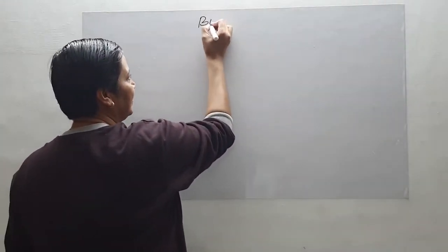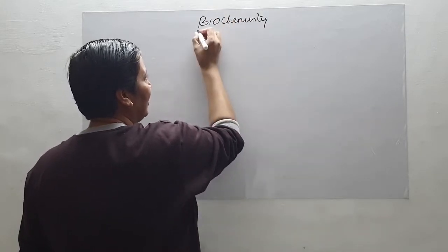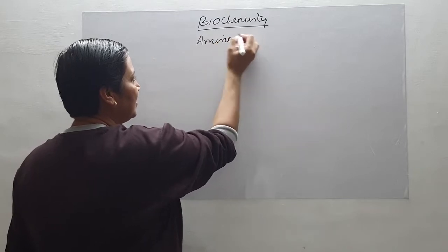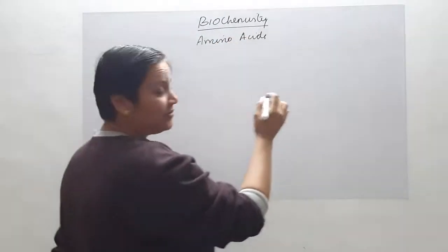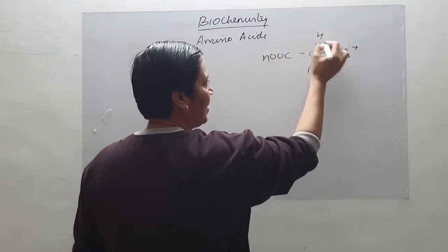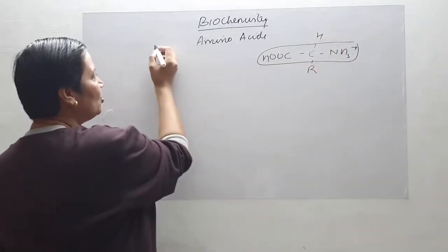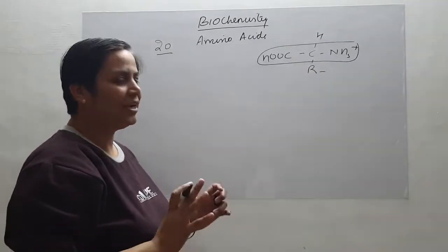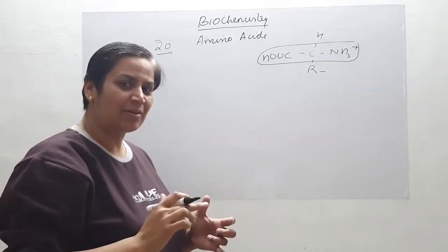Hi friends, good afternoon. Today I will be discussing the metabolism of amino acids. Whenever we discuss the metabolism of amino acids, we have to study it under two categories because if we see the generalized structure, there are 20 standard amino acids which differ only at the R-group position. Metabolism is actually catabolism plus anabolism.